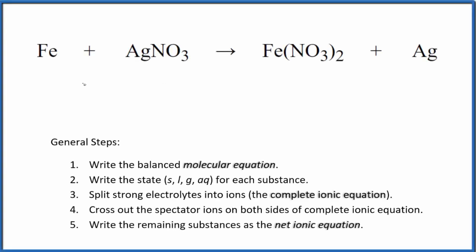Let's write the balanced net ionic equation for Fe plus AgNO3. This is iron metal and this is silver nitrate. So the first thing we need to do with net ionic equations, we need to balance the molecular equation. This is the molecular equation.